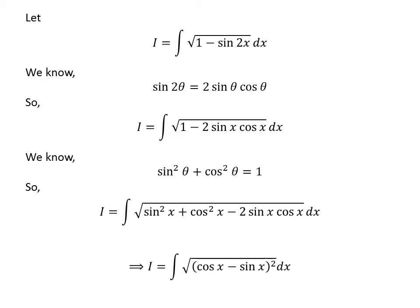As square of sine of x plus square of cosine of x minus 2 times sine of x times cosine of x is in the form of square of a plus square of b minus 2 times a times b, which is equal to square of a minus b, the above integrand becomes square root of square of cosine of x minus sine of x.